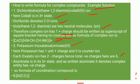Aluminate is in its third state, and as written 'aluminate' it denotes the complex entity has a negative charge. Whenever the complex entity carries a negative charge, the metal atom name is written with the suffix '-ate'. So the formula of the coordination compound is K[Al(C₂O₄)₃].